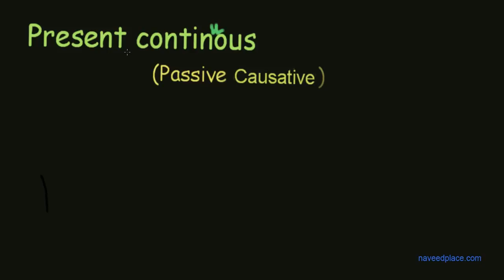Present continuous passive causative is when we are wanting someone to do something as a professional service. Now it's time to see the structure of present continuous passive causative.